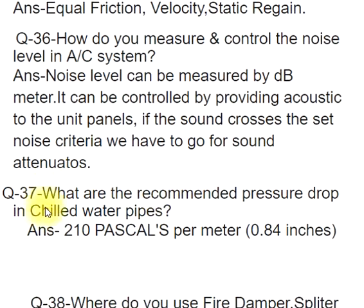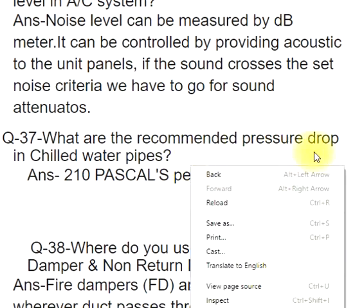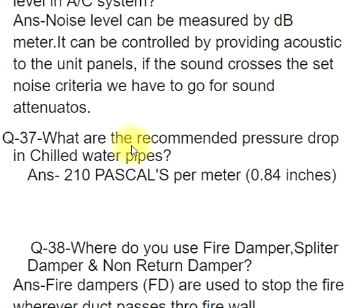Q37: What are the recommended pressure drops in chilled water pipes? ANS: 210 pascals per meter, 0.84 inches.